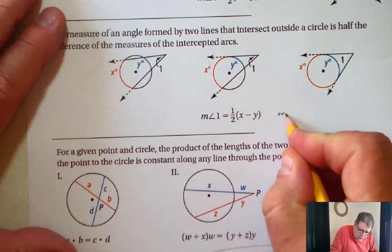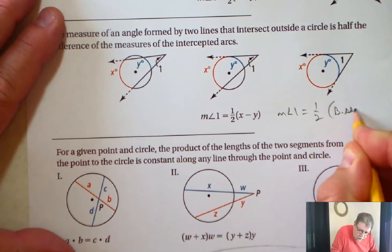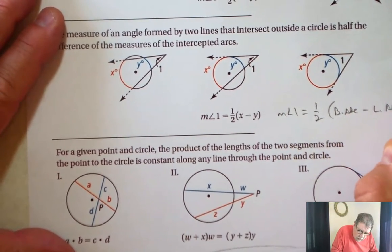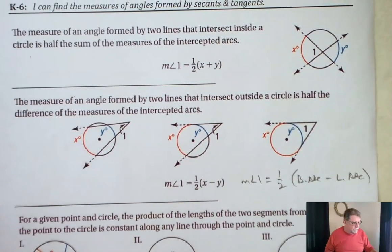This one, again, I like to say the measure of angle one is equal to one-half the big arc minus the little arc, as well as the formula from up here. Let's take a look at some examples next.